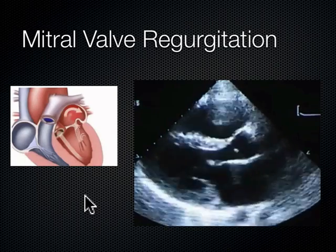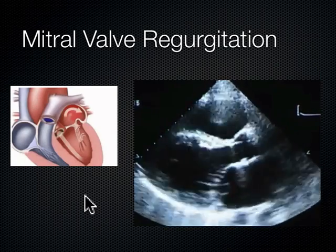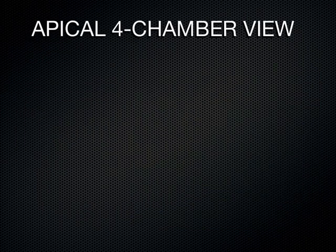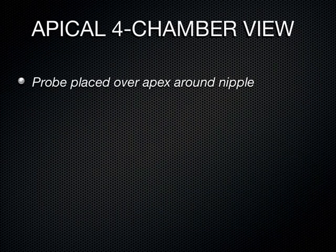That's a fancy adjustment you can do on the machine. Now we're going to switch to the apical four chamber view — this is probably the hardest view of the heart to get, the most challenging. It requires a lot of patient positioning; it's particularly difficult in women with large breasts because you've got to move them out of the way. This is the one you're going to struggle with to obtain, but it gives you the most bang for your buck.